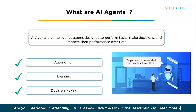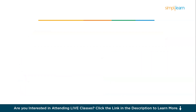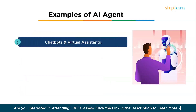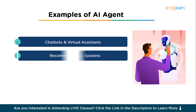To understand real-world applications of AI agents, here are a few examples. The first is chatbots and virtual assistants — AI agents that engage in text-based or voice-based conversations with users. They are widely used for customer service, answering common queries, processing orders, or helping users navigate websites, offering 24/7 availability.